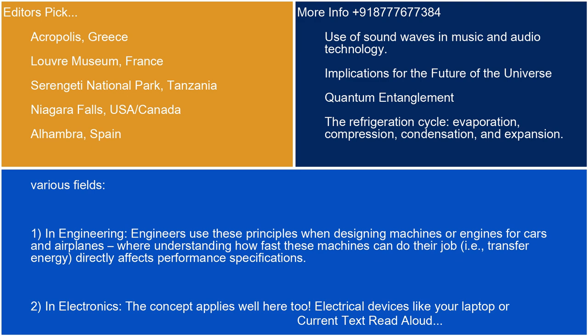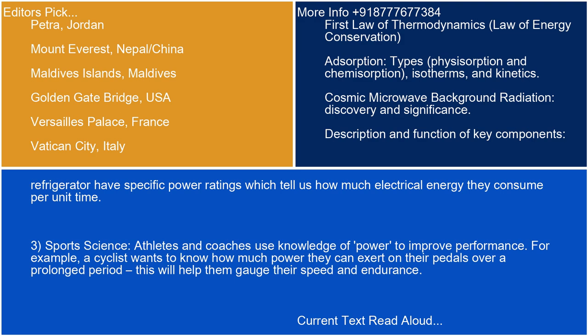In electronics, the concept applies well here too. Electrical devices like your laptop or refrigerator have specific power ratings which tell us how much electrical energy they consume per unit time. In sports science, athletes and coaches use knowledge of power to improve performance. For example, a cyclist wants to know how much power they can exert on their pedals over a prolonged period, which helps them gauge their speed and endurance.